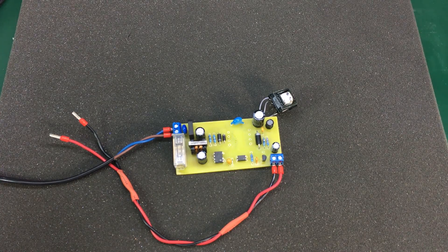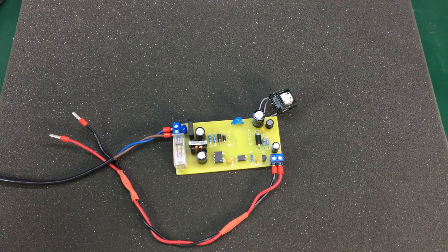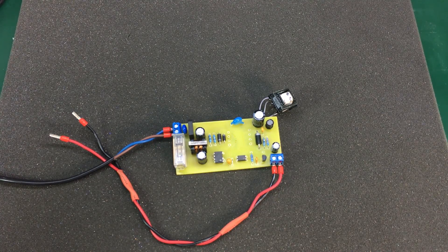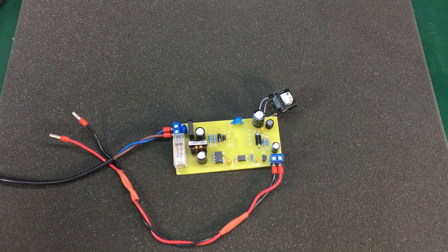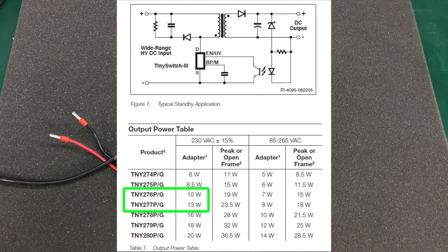After installing the TNY-277, the circuit started working fine. It didn't go into thermal protection anymore. And if you think about it, the only difference between what I originally used, the TNY-276, and the TNY-277, is their power rating.